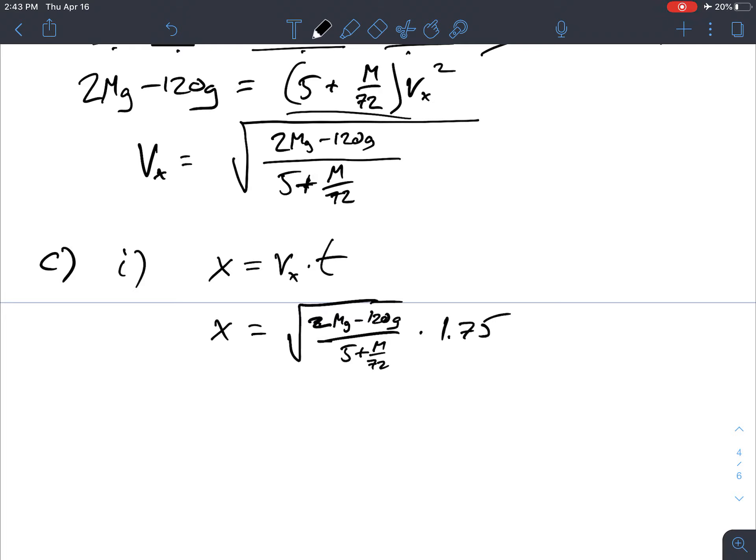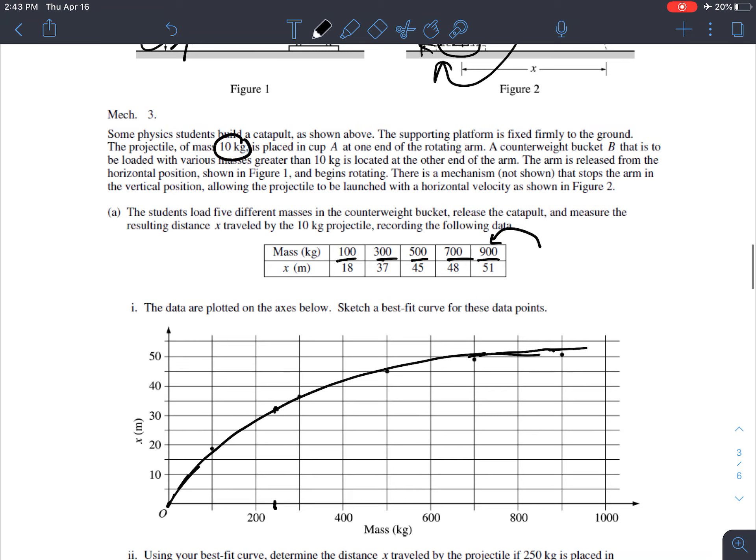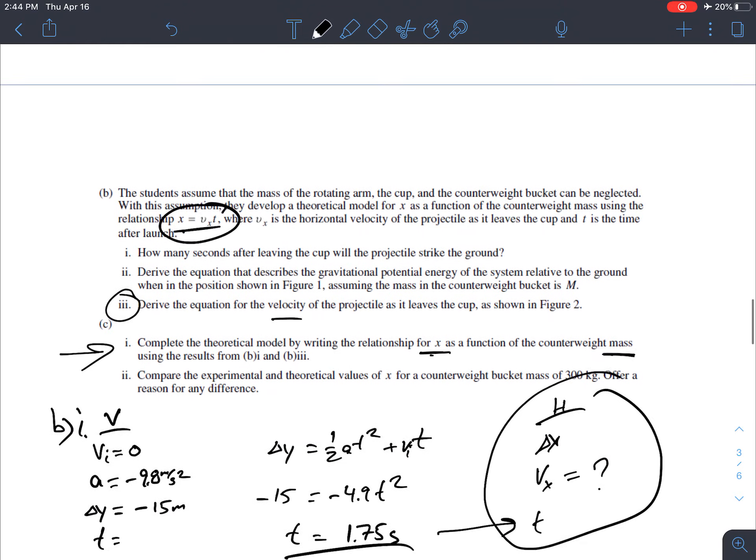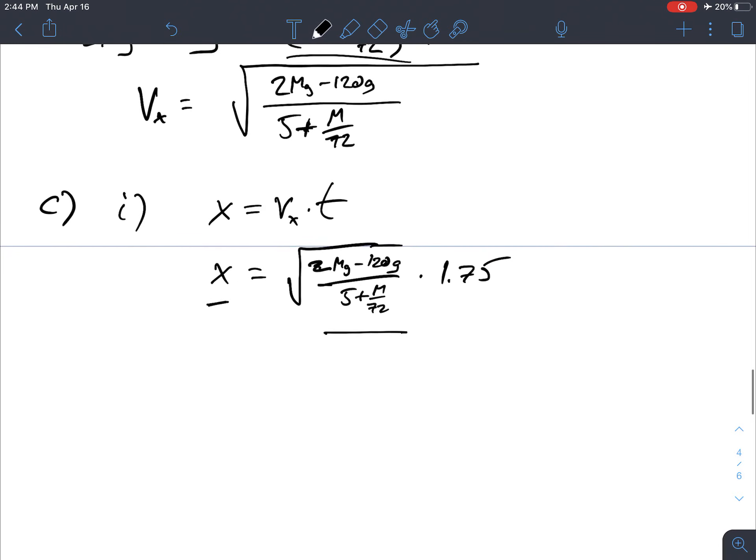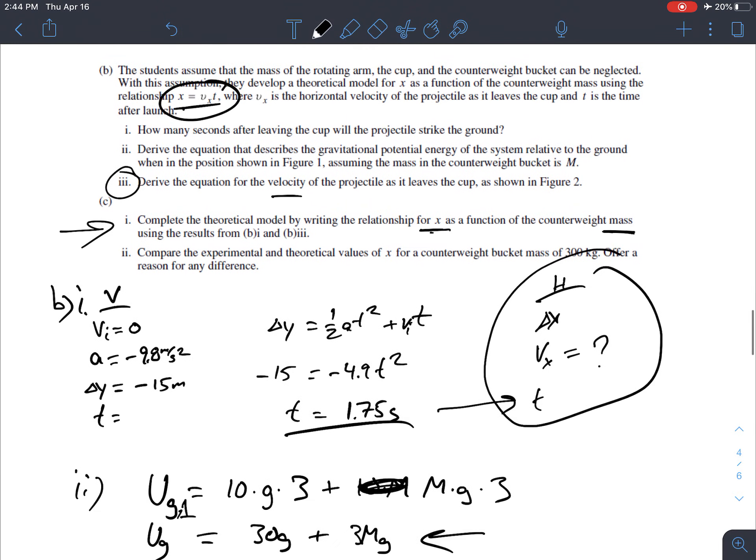And why does this complete the theoretical model? What's that all about? Well, what we have now is we have x as a function of M. And the data here, that's the relationship here. We think that x depends on how much mass you put in the bucket, and that's what we were looking at a graph of at the beginning. So this completes that theoretical model.